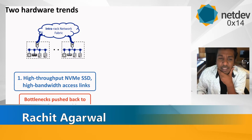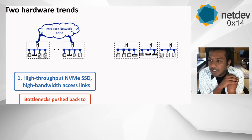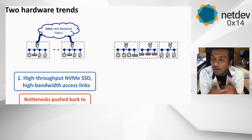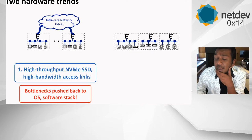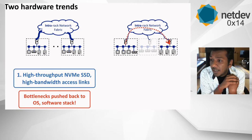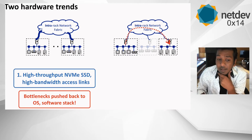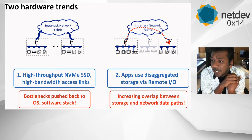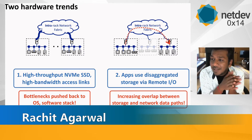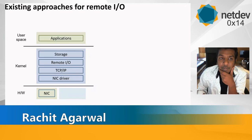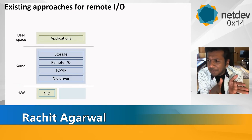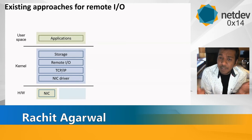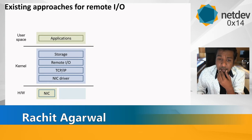The second trend, perhaps the more motivating factor for this work, is resource disaggregation. Many applications are now accessing data over storage devices that are typically disaggregated from compute. A lot of requests are going over the network from the compute side to the storage side, which means there's an increasing overlap between the storage and network data paths.